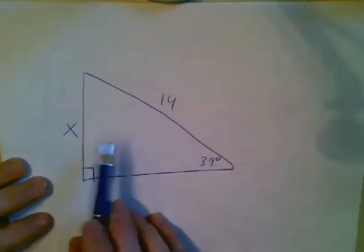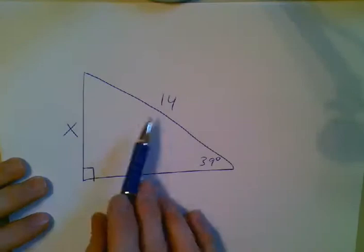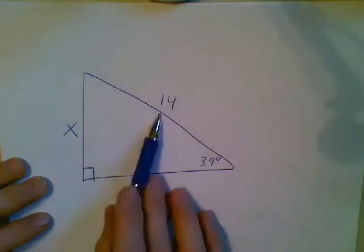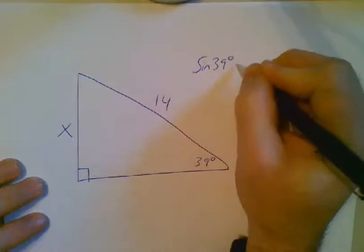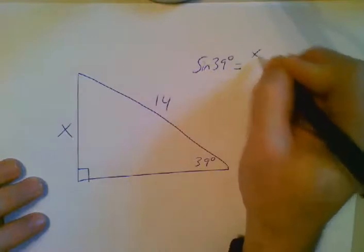Because you're looking for the opposite and you know the hypotenuse. Opposite, hypotenuse, sine. So here we go. This is what you would have done. Sine 39 degrees equals x over 14.